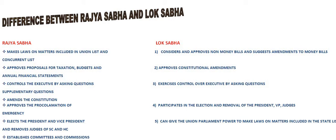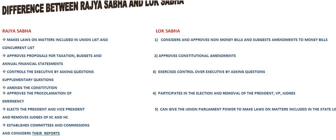This is just the difference according to their functions. We will go through them. Rajya Sabha makes laws on matters included in the Union List and Concurrent List. You will know what the Union List and Concurrent List are — this is your homework for today. Please mention it to me in the comments section. Whereas, if we talk about Lok Sabha, it considers and approves non-money bills and suggests amendments to money bills.